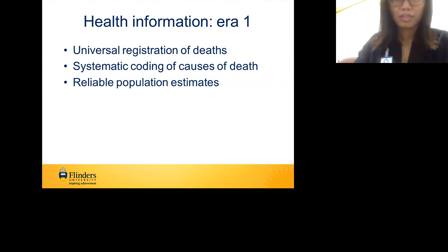Universal registration of deaths was a key component — and it wasn't only deaths that began to be universally registered at this time; it was also births and marriages. Marriages might seem not an obvious health information target, and indeed what the government and particularly the House of Lords thought they were funding was not a health information system, but a system to help manage the transmission of property between generations. It was people such as Farr who were involved in its establishment who saw its enormous potential as a health information system.